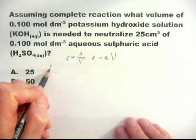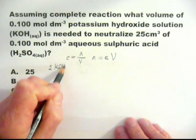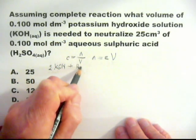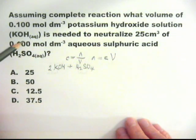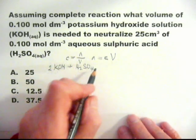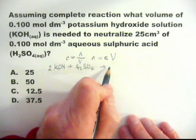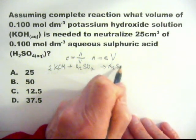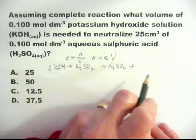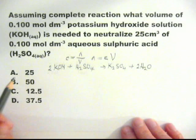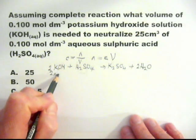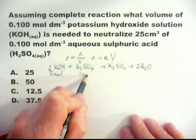Let me do the equation. 2KOH plus H₂SO₄. And of course, quite decently, the examiners have given you the formula to make it easy for you. K₂SO₄ plus 2H₂O. And there's two moles there, one mole there.